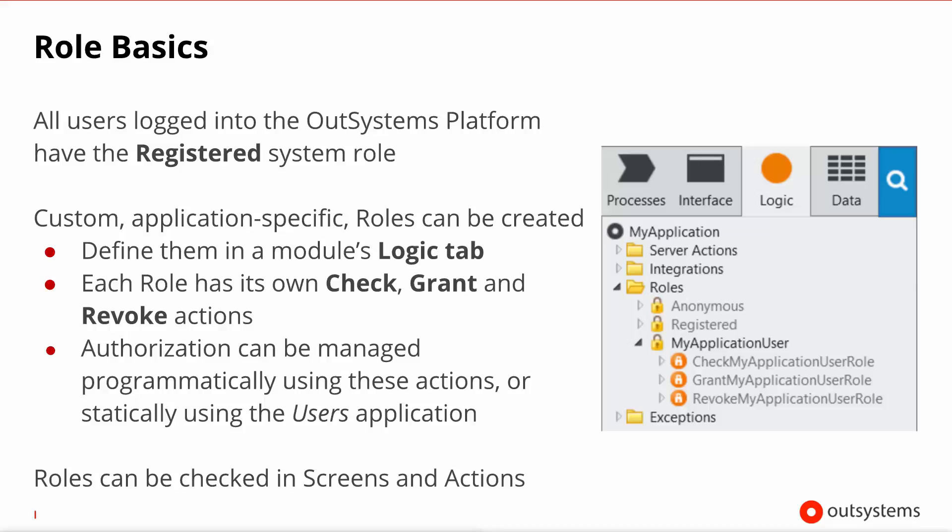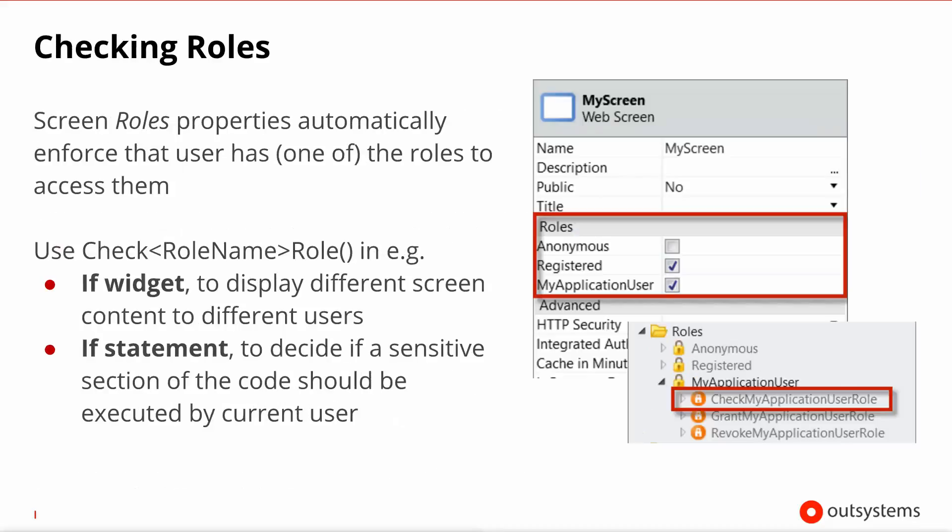Each role has its own check, grant, and revoke actions, and these actions also exist for the registered role. Once roles exist in your module and it is published, they become available in the users application so you can statically, via back-office, authorize users to have certain roles. In your code, these roles can be checked in screens and actions. The simplest way to enforce a role on a screen is using the properties of the screen, as you can see in the screenshot.